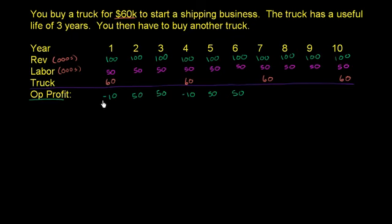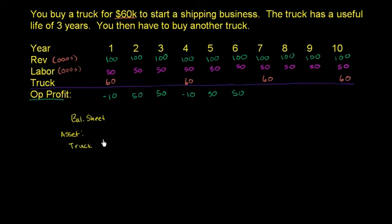So let's put a balance sheet right here at the beginning of year one. By capitalizing the truck, we're essentially saying we're going to spend $60,000. Let's say we started with $60,000 in cash and used that to buy a truck. So on our balance sheet, in the asset category, we have a truck, and we're saying that right when it's brand new it is worth $60,000. We have no liabilities — zero. So our shareholders' equity is $60,000 minus 0, which is $60,000. Our company is worth $60,000 on our books.